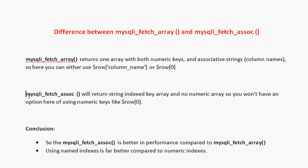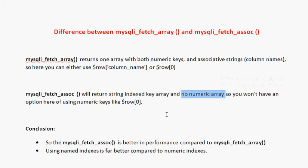Now, what does mysqli_fetch_assoc return? It also returns one array, but it will only return a string index — there is no numeric index. So we can't use something like dollar-row-zero to get the value. mysqli_fetch_assoc will only allow access using the column name.